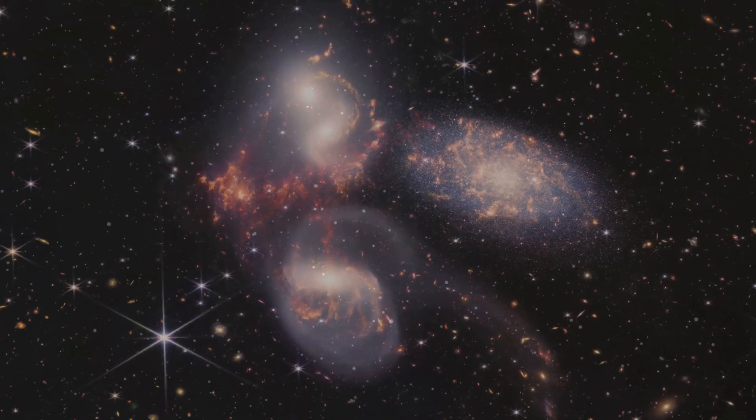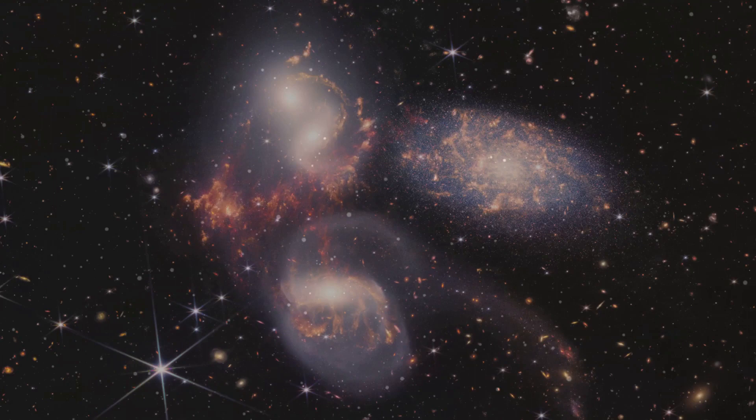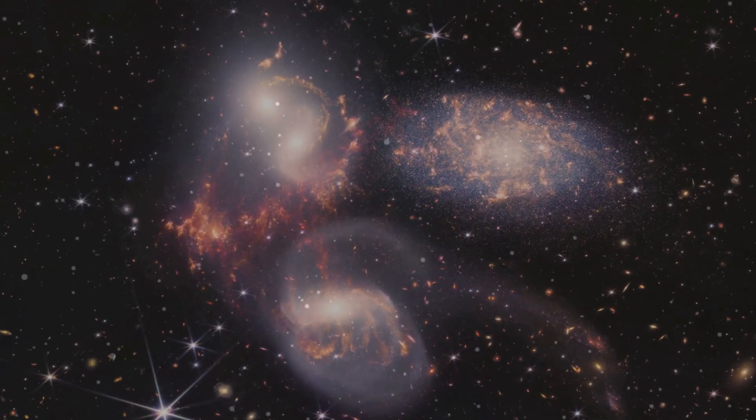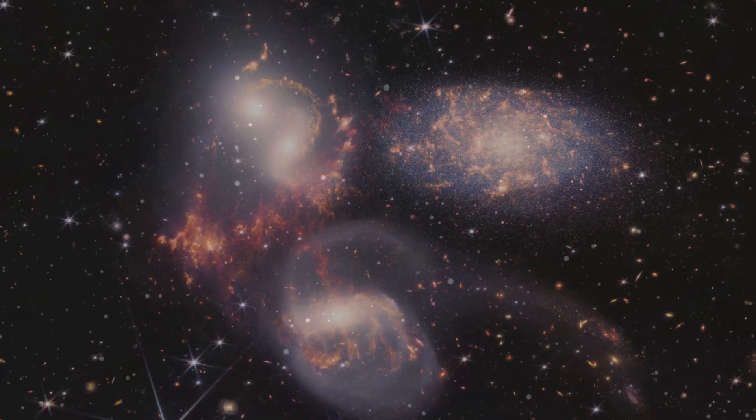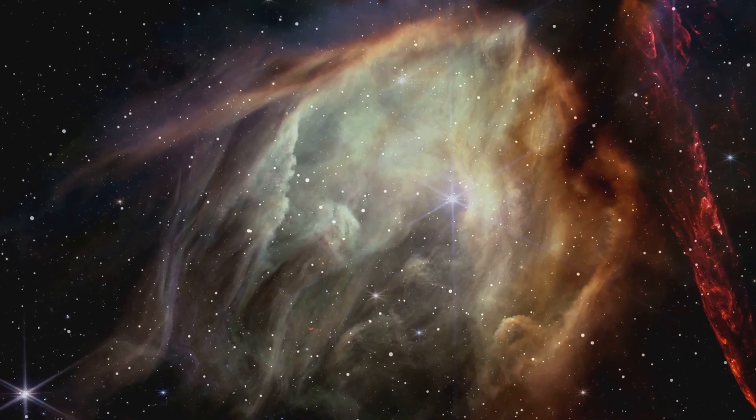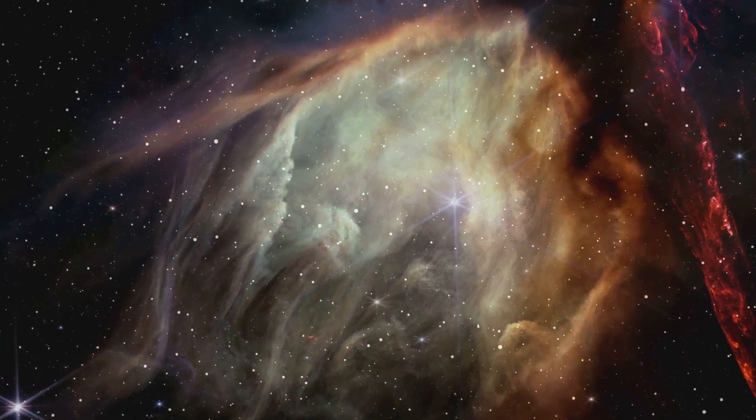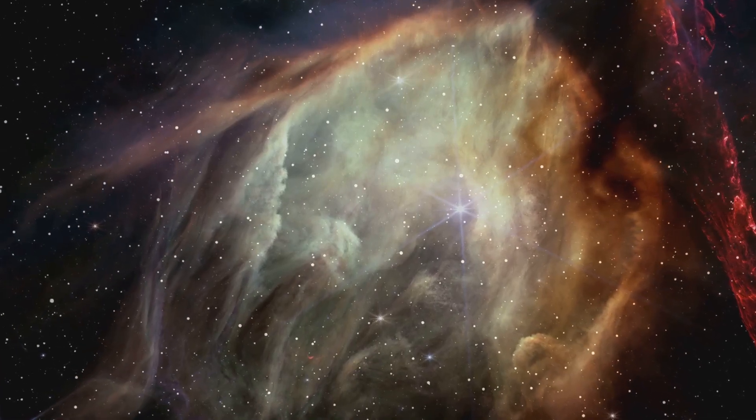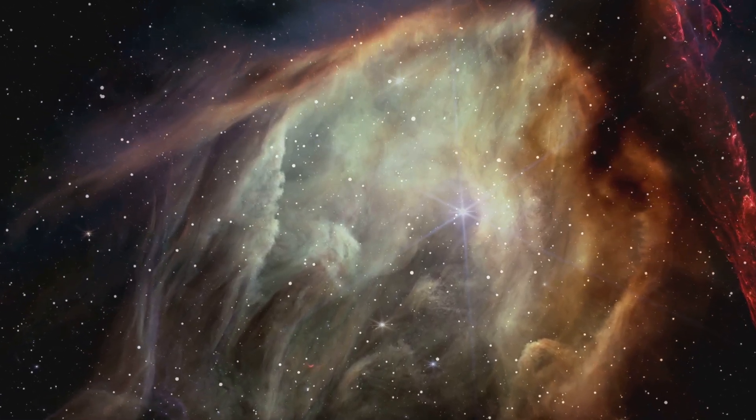But that's not all. The James Webb Telescope has also discovered the earliest strand of a cosmic web that links galaxies. This filament, estimated to be about 3 million light-years long, appeared about 830 million years after the Big Bang, anchored by a quasar, a supermassive black hole. This discovery provides crucial insights into the formation of the universe and the connections that hold it together.